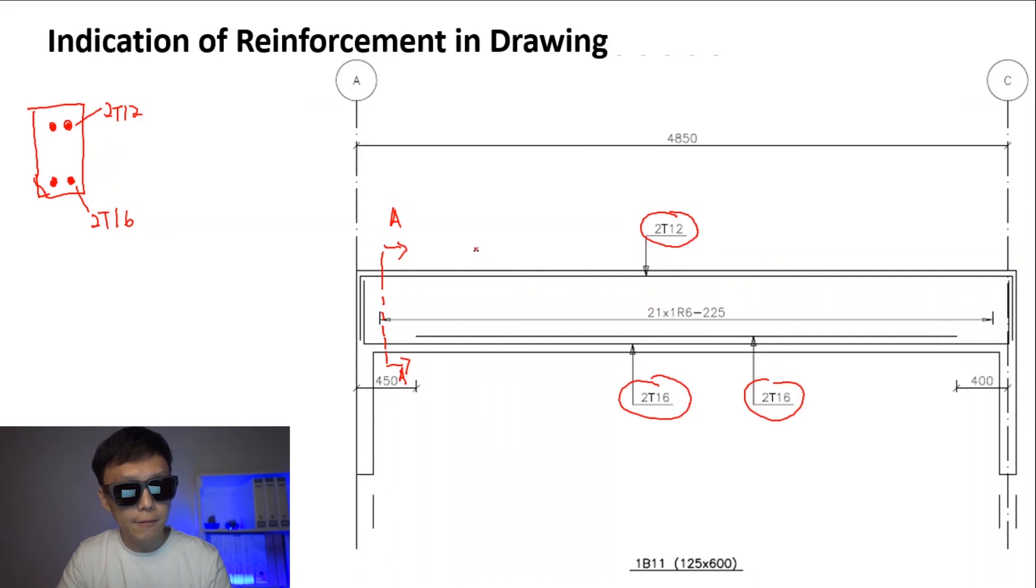And if we cross section at point B, what we will see is we will still see 2T12 here. And for the bottom bar, we will see four 2T16, because this we got two, this we got two. So at the middle part of this beam, we will see four 2T16. This is how we read the drawing for the top bar and the bottom bars.